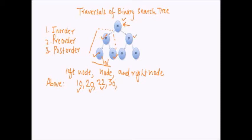We go to node 37. Is there a left subtree of node 37? Yes, node 35 is there. So we move down to the left subtree. Is there a left subtree of node 35? No, because the left child of 35 is null. So we print 35. Since the left subtree of 37 is printed, we print 37. Is there a right child of 37? Yes, so we move to node 40. Is there a left subtree of node 40? No. So we print 40. Is there a right child of 40? No. So we stop here. This is the in-order traversal of a binary search tree.